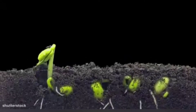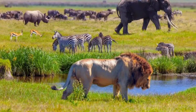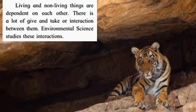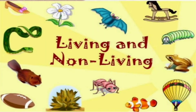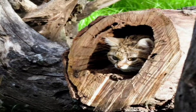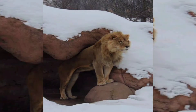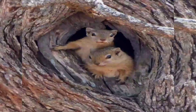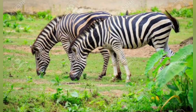Sunlight yani surya prakash, hawa, paani, mitti, plant yani vanaspati, prani — ye sab environment ke ghatak hai. Living and non-living things depend on each other. There is a lot of give and take, or interaction, between living and non-living things. Environmental science, that is EVS, studies these interactions. Aur inke beech aapas mein sada kuch len-den arthat antarkriyaen hoti hai, aur inhi ka adhyayan hum EVS mein karte hai.